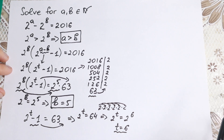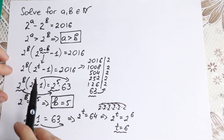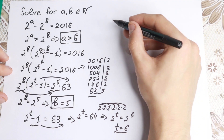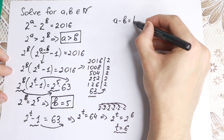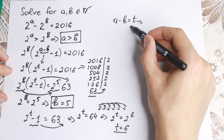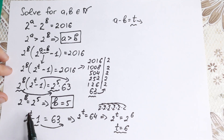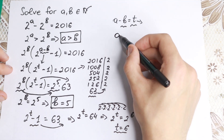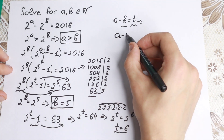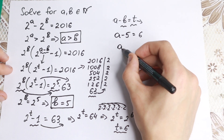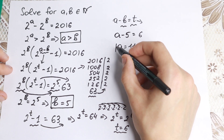But we need to find a and b, not t. We set the substitution a minus b equal to t. We know b equals 5 and t equals 6, so a minus 5 equals 6, which gives a equals 6 plus 5, equal to 11.